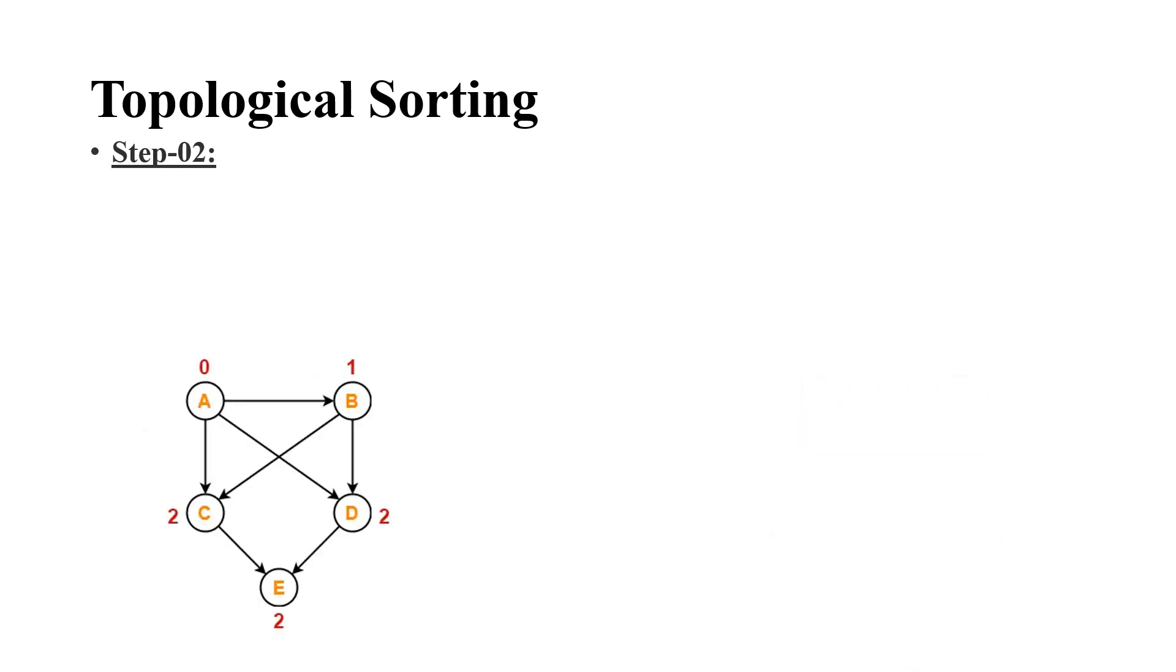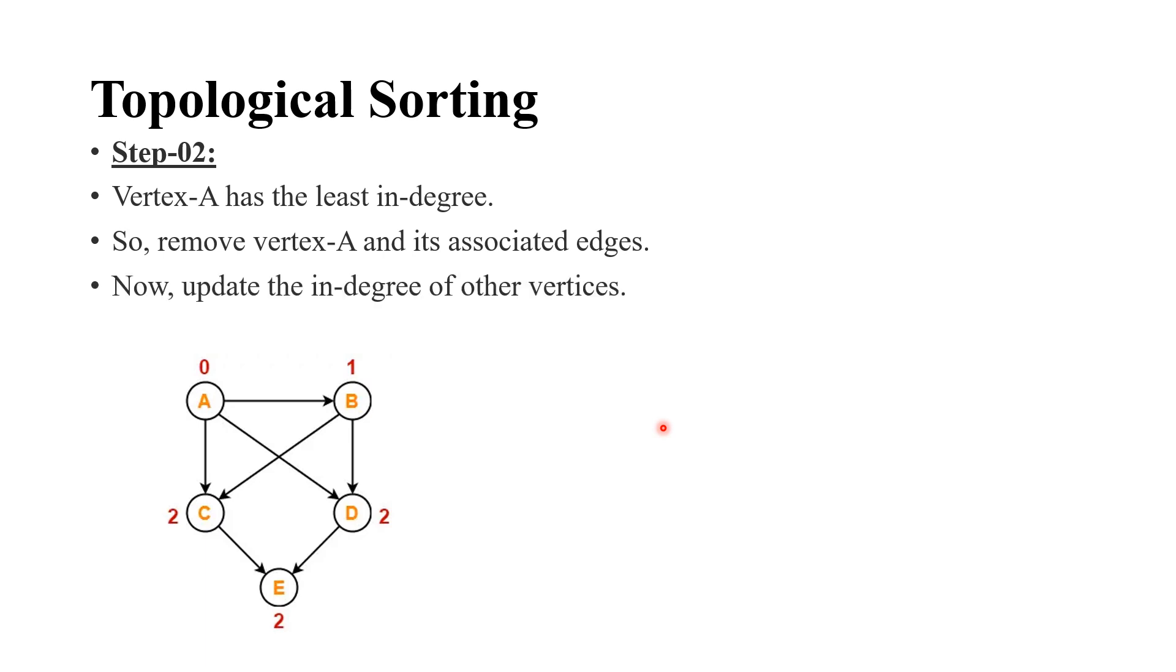Next step is we have to find the vertex which is having the least indegree. So, 0 is the least value and A is the vertex which is having the least indegree. Now, remove the vertex A and also its associated edges and update the indegree of other vertices which is given here. So, A has been removed. For other vertices, the indegree is updated.